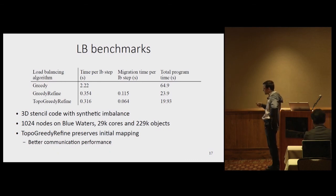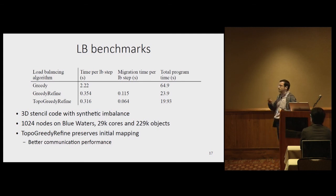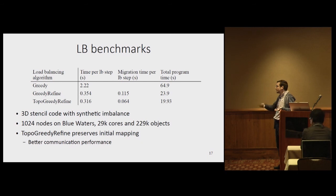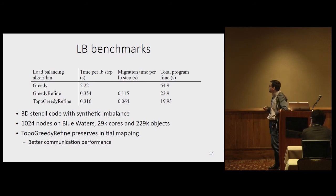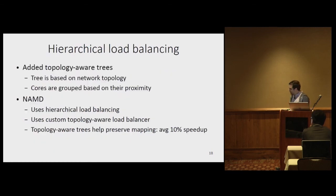Here are some results with a centralized load balancing algorithm on a 1,000-node job with 200,000 objects. Previously, if we wanted to do centralized load balancing with greedy, each load balancing step would take about two seconds. Now it's just about 350 milliseconds. So we can use centralized load balancing with larger jobs. Also important: this is a stencil-based code, so communication matters. The topology-aware variant actually obtains better performance — not because it balances load faster, but because it preserves the communication mapping.